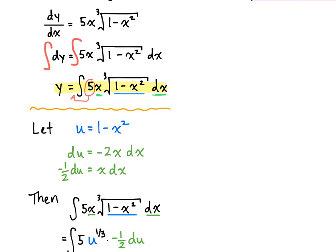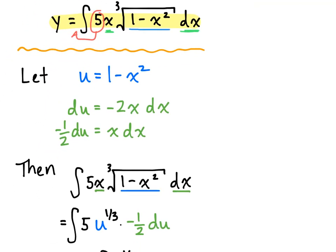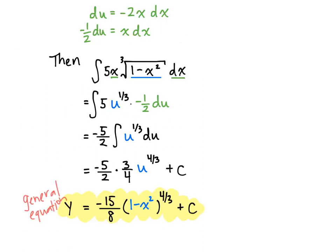When we make that u substitution, we've got du equal to negative 2x dx, so x dx equals negative one half du. That takes care of the x and dx and of what's inside the radical. So substituting u for 1 minus x squared to the one third and using negative one half du, we clean up, integrate, and those constants come out. Now we're integrating u to the one third, which gives us three fourths u to the four thirds. Don't forget your plus c. Substituting back gives us the general equation: negative fifteen eighths times 1 minus x squared to the four thirds plus c.